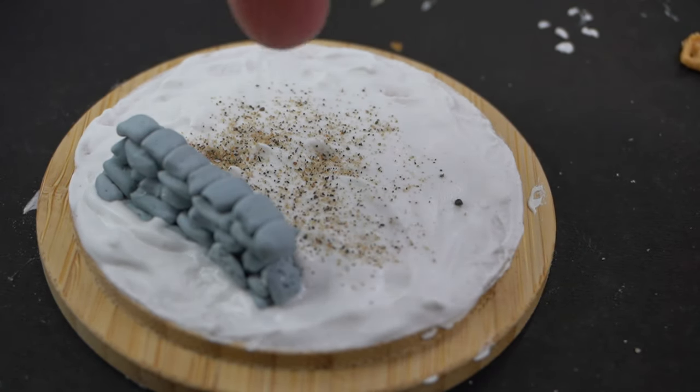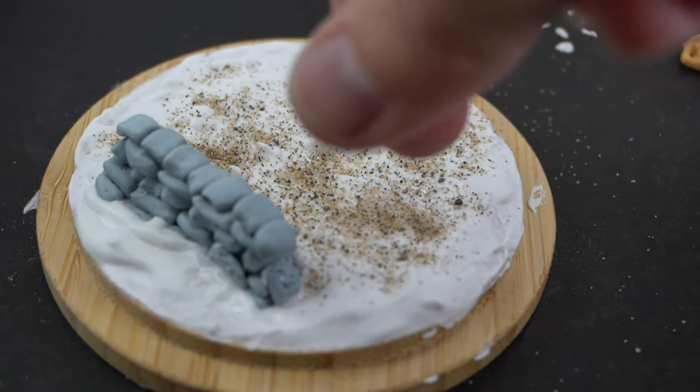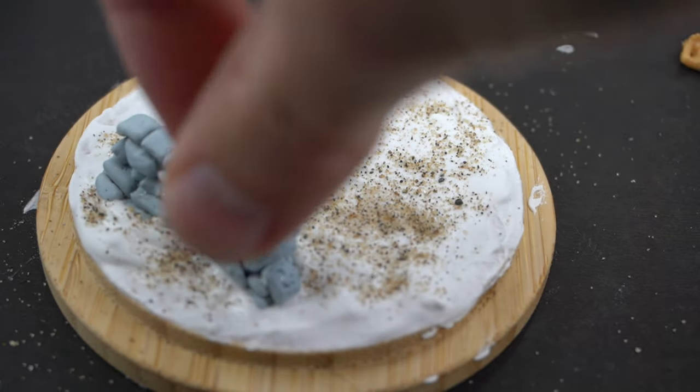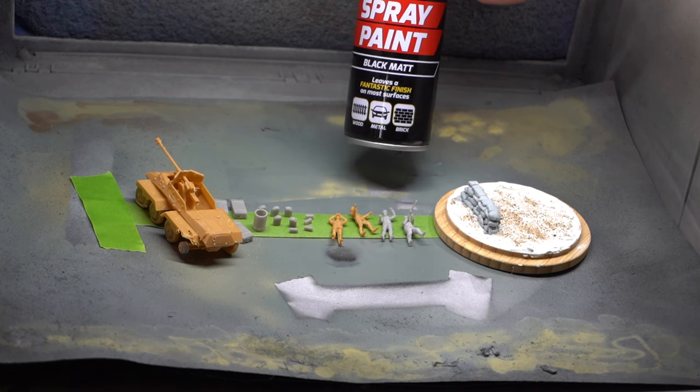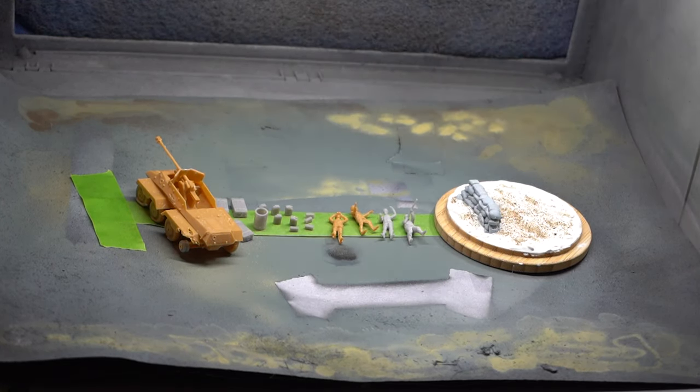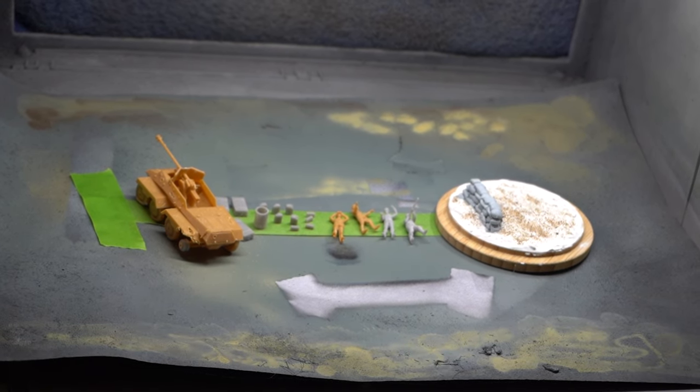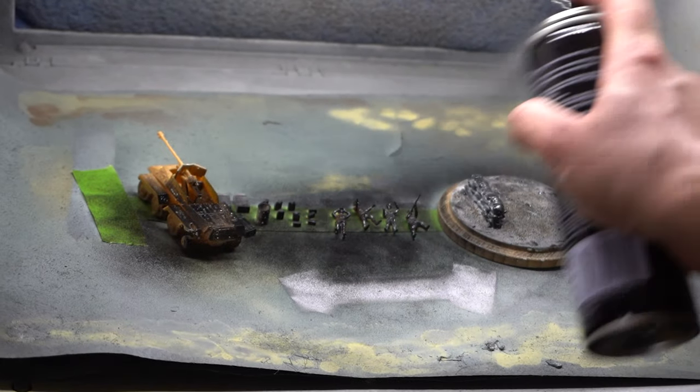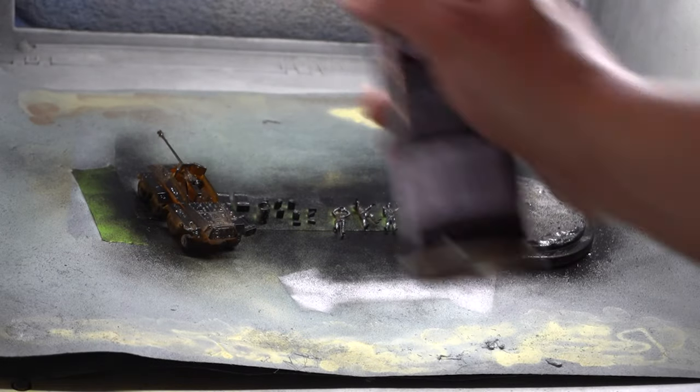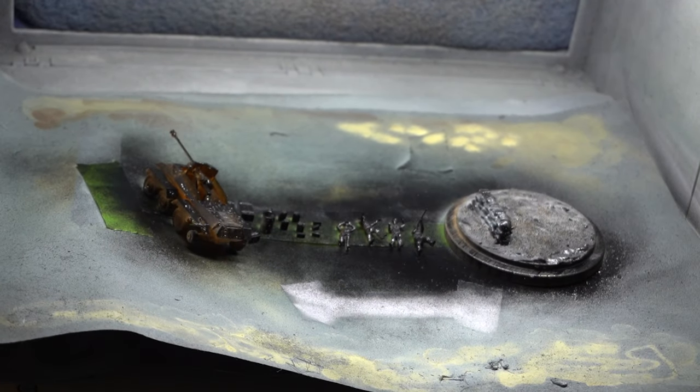Whilst the filler was still wet, I'd sprinkle some sand onto the surface to give it a little bit more extra texture. Now it's time to prime everything, so I've got this very generic black spray paint primer and I simply used this on all of the parts I'm going to add to the diorama.